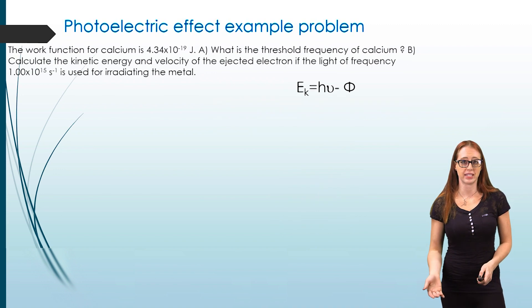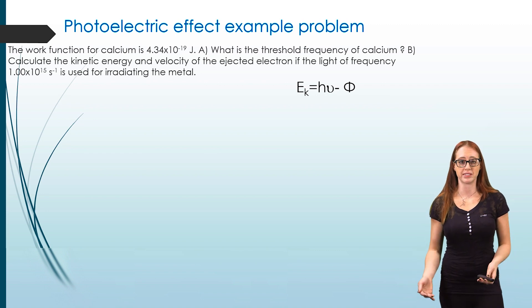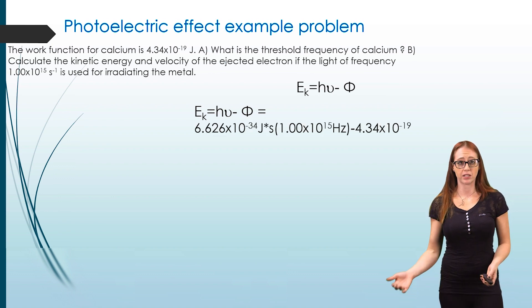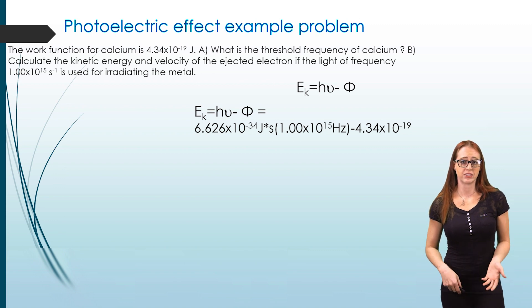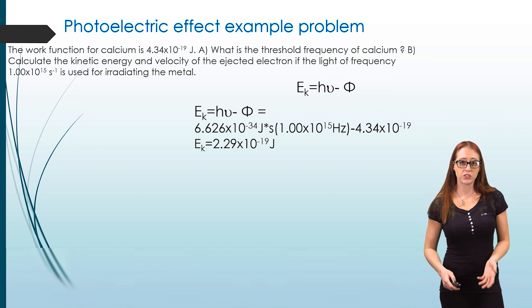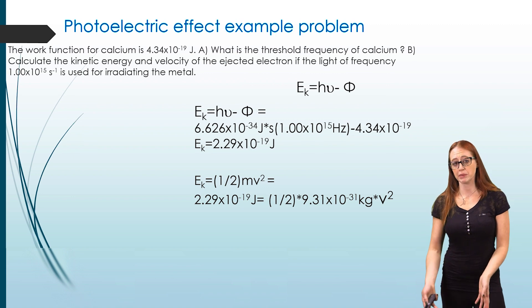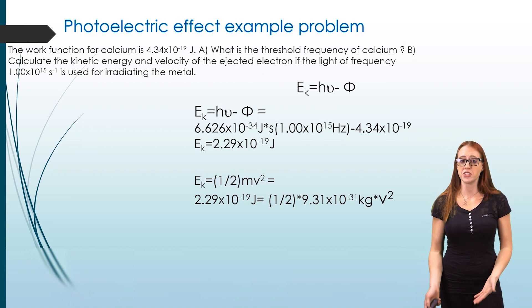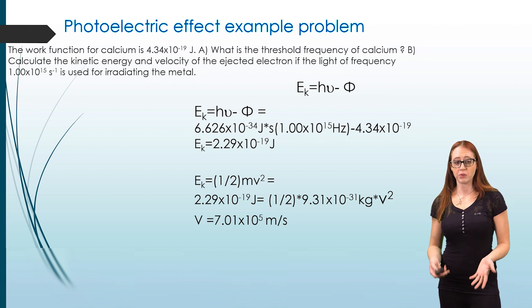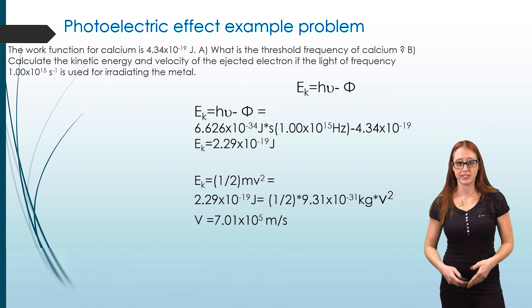Now that we have the kinetic energy, we can fill it into ½mv² to solve for the velocity. The mass here is the mass of an electron, which is a known value that will be provided on the exam. From here, all we have to do is calculate our value to get our velocity, check our units and significant figures, and everything looks okay.